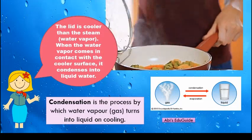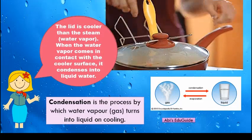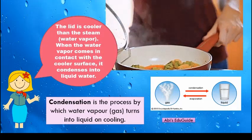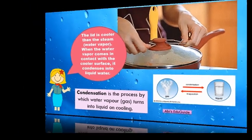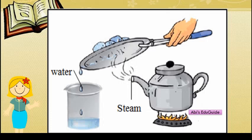Condensation is the process by which water vapor or gas turns into liquid on cooling. When we heat water, water changes into water vapor — this is called evaporation. If that water vapor touches a cold surface, such as a lid, it changes back to liquid. That is called condensation.